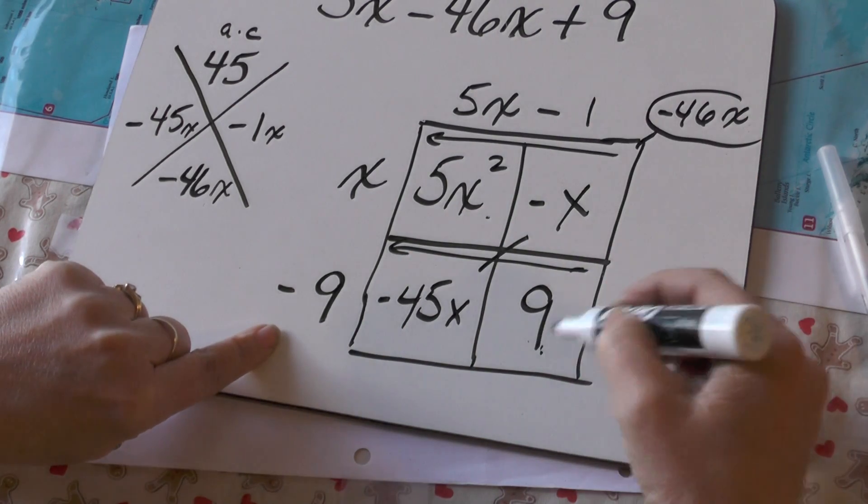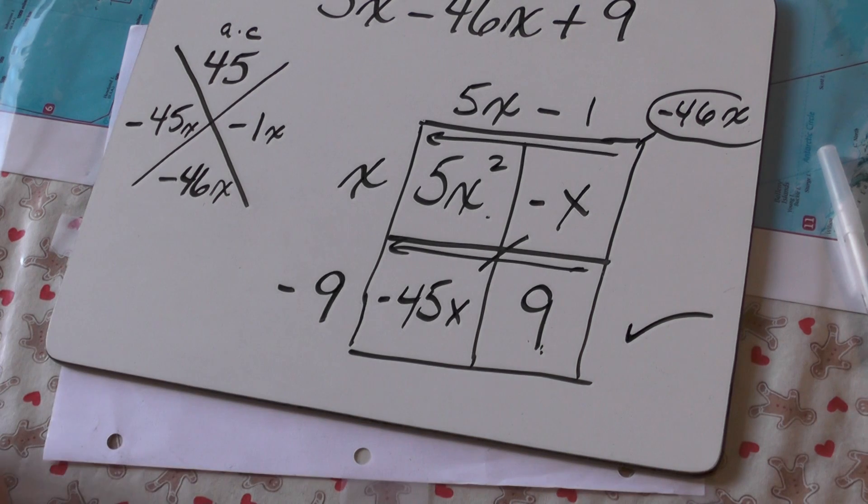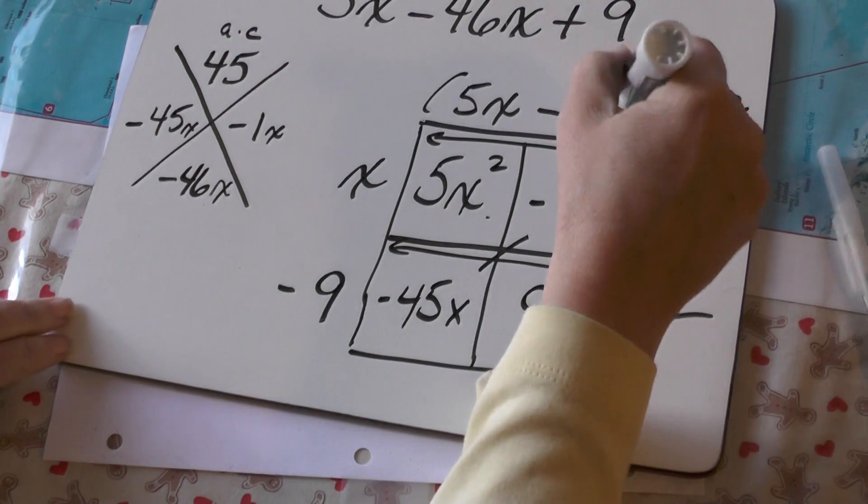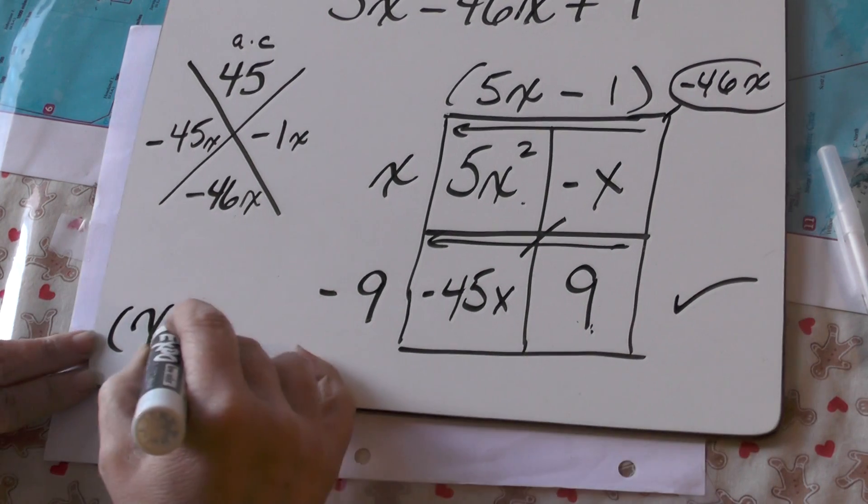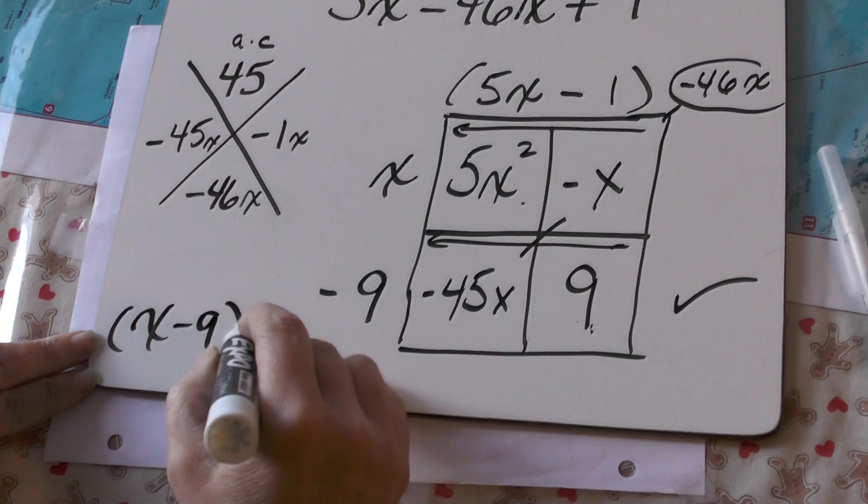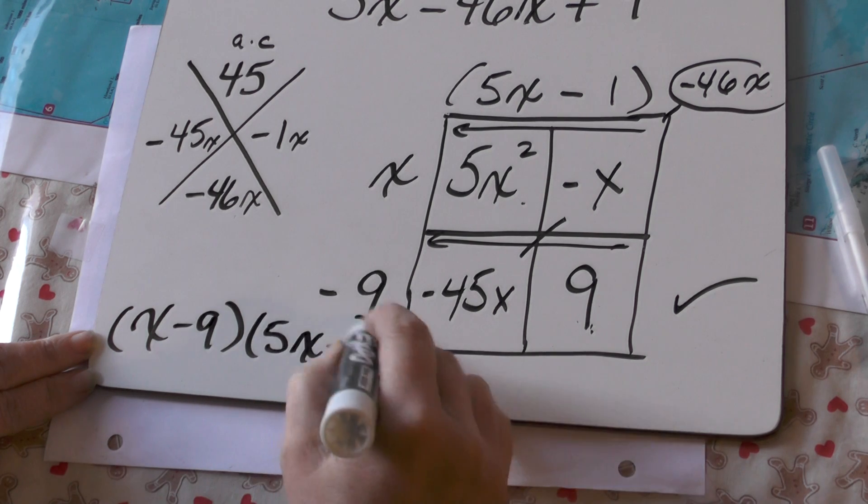And, then, negative 1 times negative 9 is 9. That all checks out. Our solution to this one, our factored solution, is (x - 9) times (5x - 1).